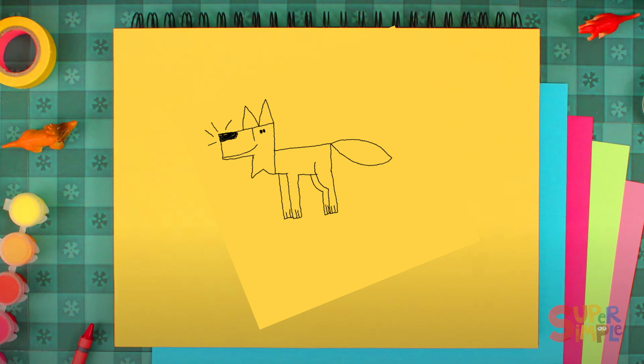Now let's add some more details to the tail. And then let's draw some zigzags on the end of his tail.